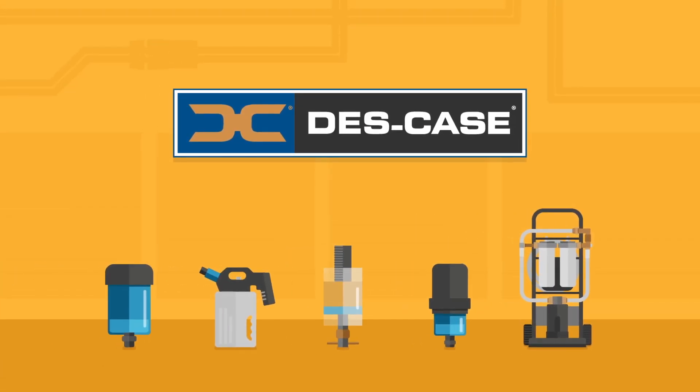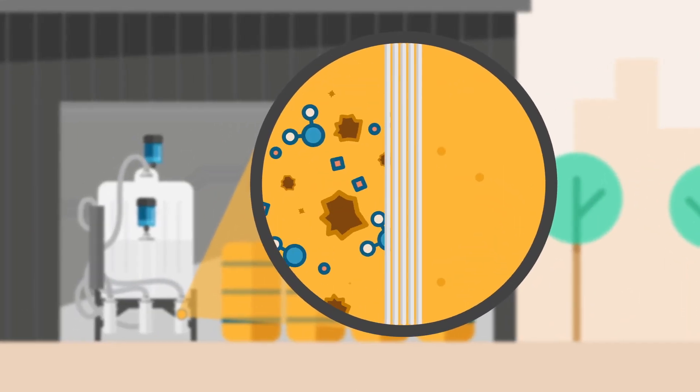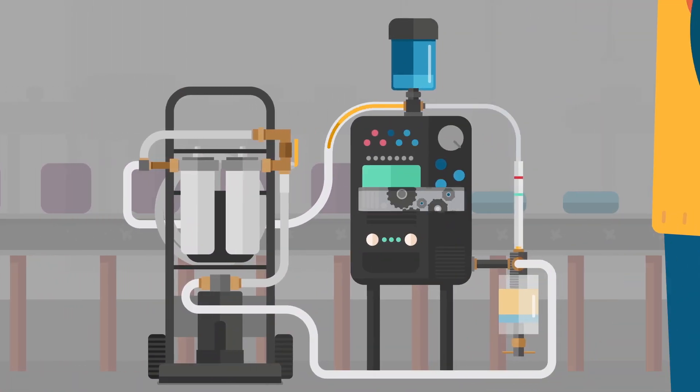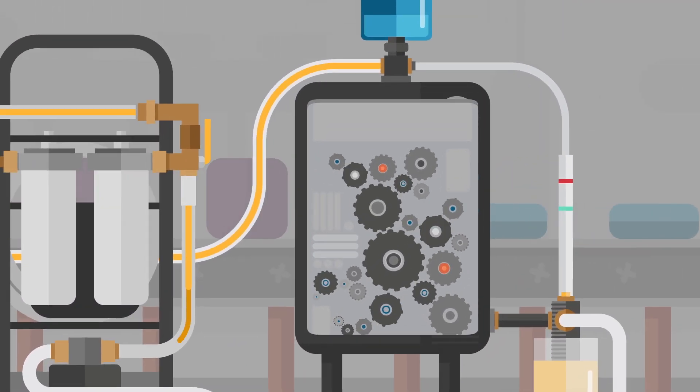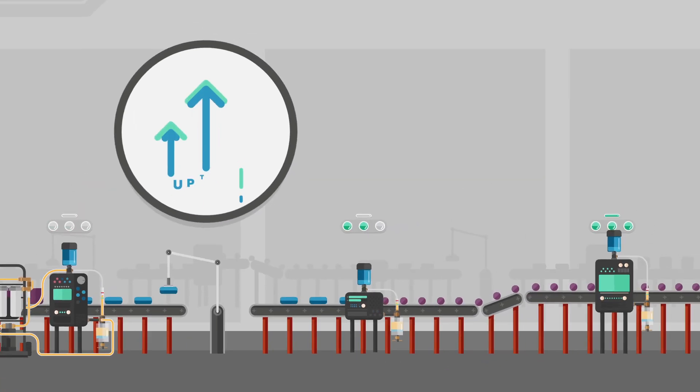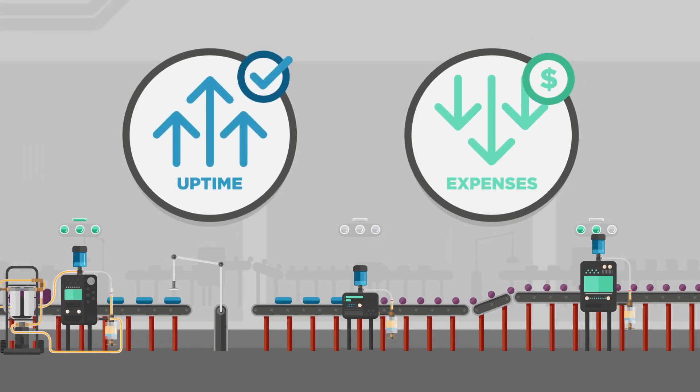Deskcase's wide range of products filter out these pesky particles and moisture, keeping oil clean from the moment it arrives and is stored at your facility, during transfer and handling, and while in use on your equipment. This means more uptime on your factory floor and less spending on oil and machine repair.